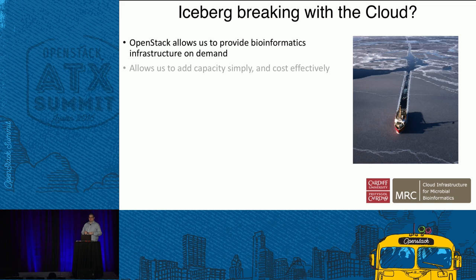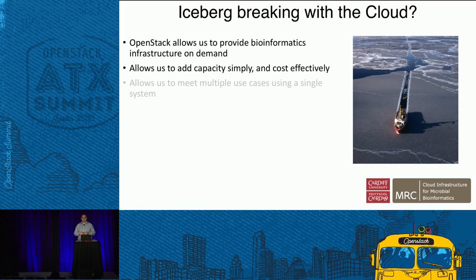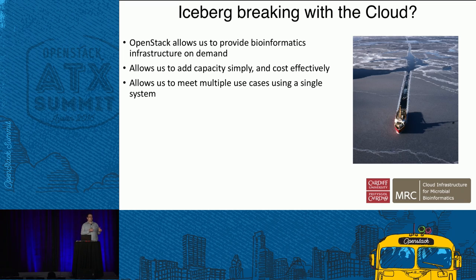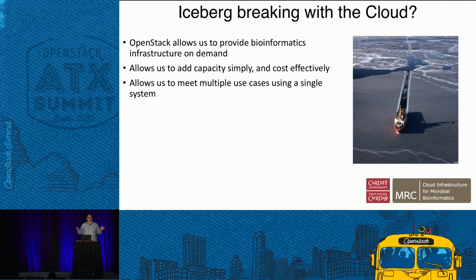We thought OpenStack was quite a good system for that. Knowing how academics work, OpenStack enables us to add hardware pretty simply and cost-effectively because we can buy capacity in larger chunks. Critically, it means we can meet multiple use cases in a single system: a postdoc with a small number of bacterial genomes to analyze probably needs a small virtual machine — maybe 64 gig of RAM and eight cores — whereas if you've got a large metagenomic dataset you might need terabytes of RAM and hundreds of cores. There's a wide range of use cases within microbiology.